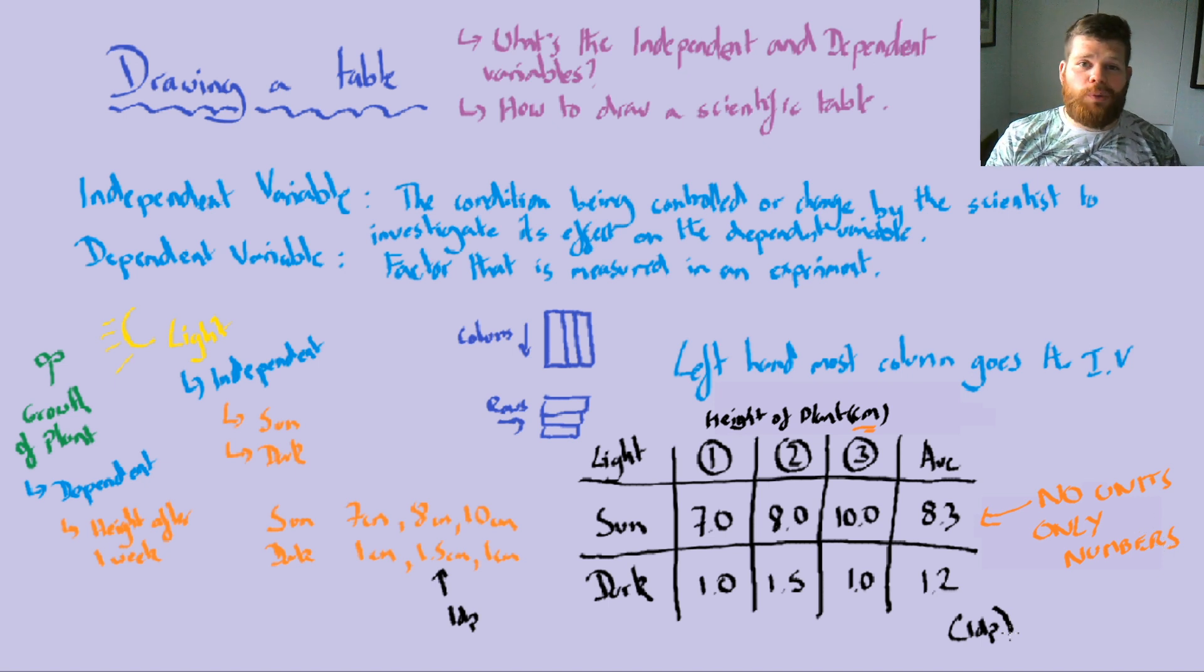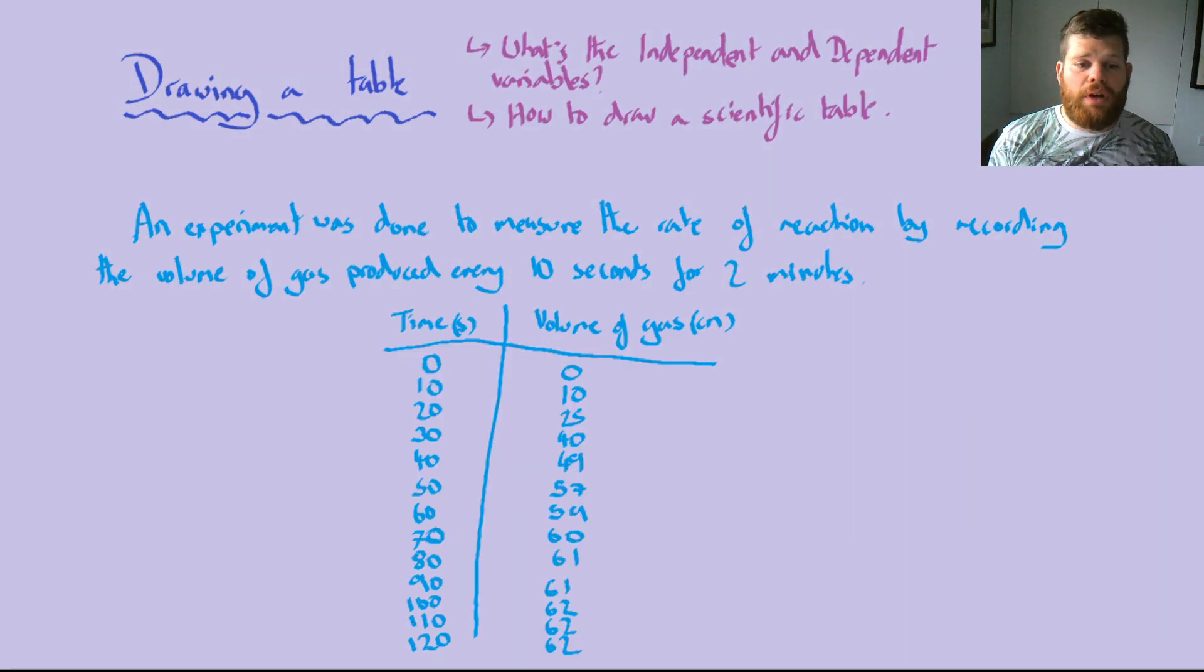So on the screen right now is another example. Here we've got an experiment that was done to measure the rate of reaction by recording the volume of gas produced every 10 seconds, two minutes. So in the left hand most column here, we've got our time and the time is our independent variable. And then here on our right hand side in the first column, we've got our dependent variable, which is our volume of gas being produced.